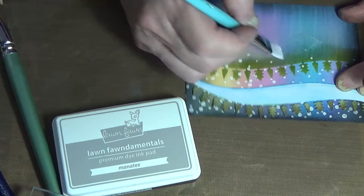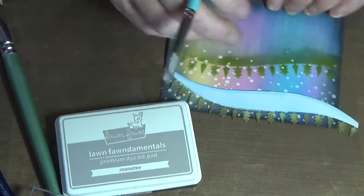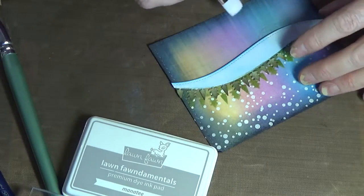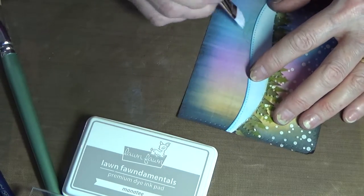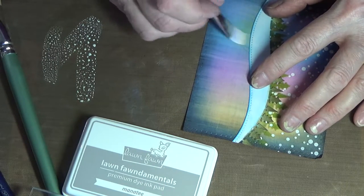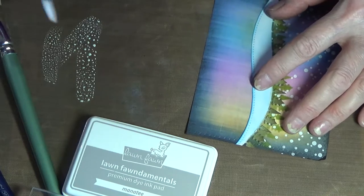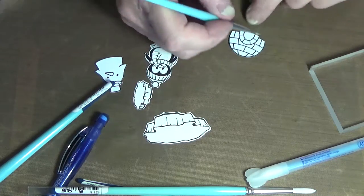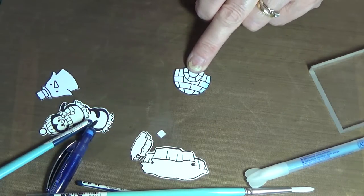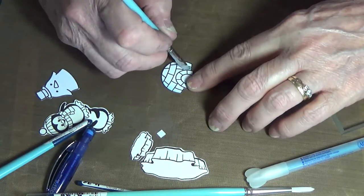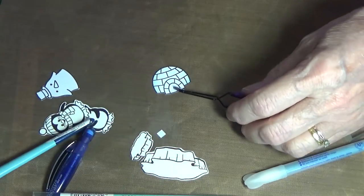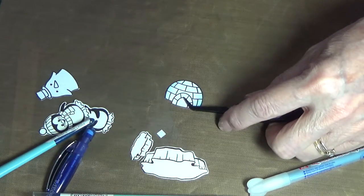I'm just whitening it a little bit there. The ink I used was Lawn Fawn Manatee. I've only recently got some Lawn Fawn inks and I'm quite pleased with them, but the lids are very difficult to remove. I don't know if anyone else has had problems with them.